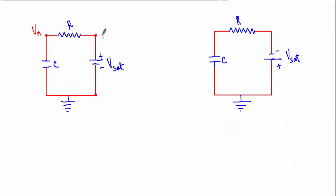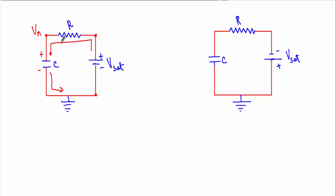Considering plus Vsat as a constant voltage source, we can show the charging circuit: the output terminal provides fixed voltage Vsat through feedback resistor R to the inverting terminal, where Vn is the voltage from inverting terminal to ground. The plus Vsat supplies a charging current to capacitor C; as charging current enters from one side, that side becomes positive. As the capacitor charges, Vn becomes more positive, and the charging follows an exponential waveform.